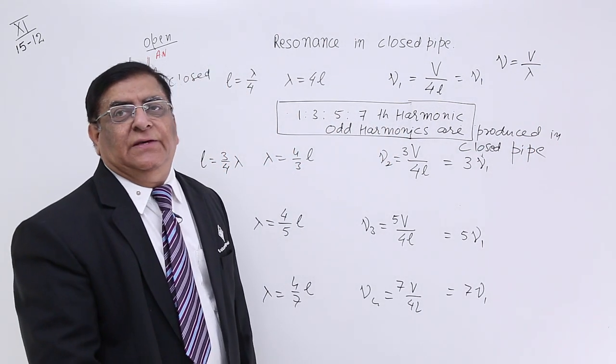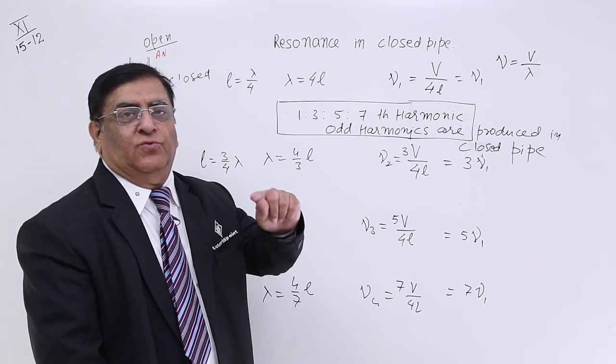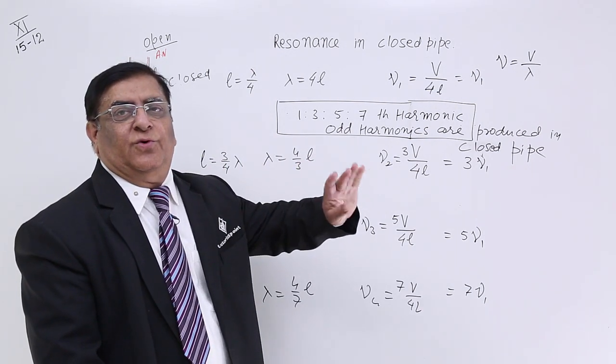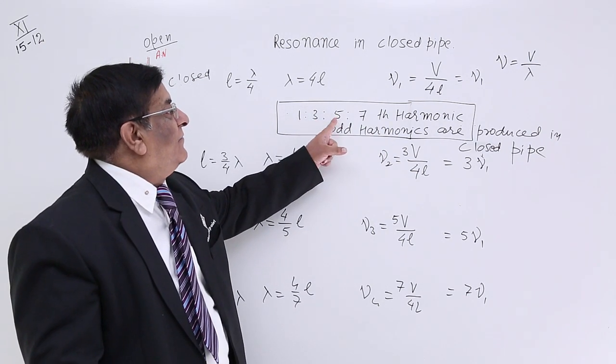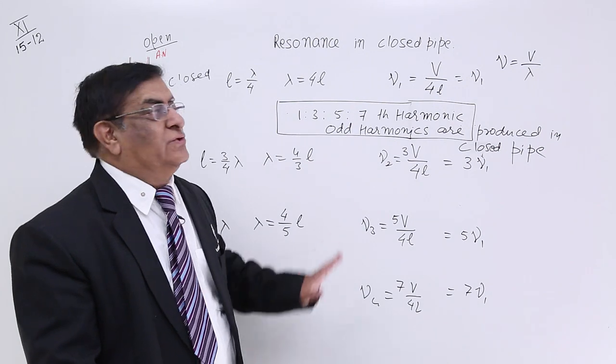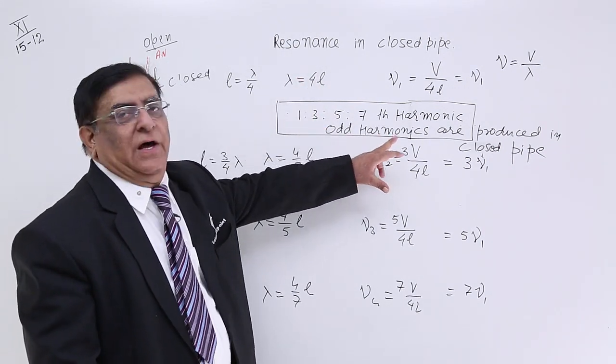In string you have seen we were listening all the harmonics. ν₁, 2ν₁, 3ν₁, 4ν₁, 5. Here we receive only ν₁ and after that 3, after that 5, after that 7. So in the closed pipe we receive only odd harmonics.